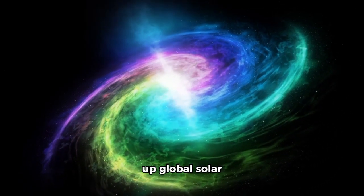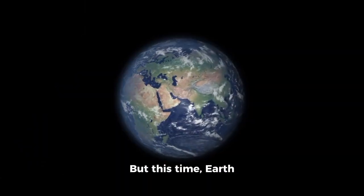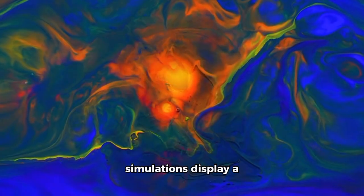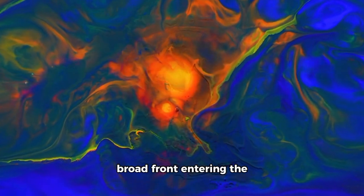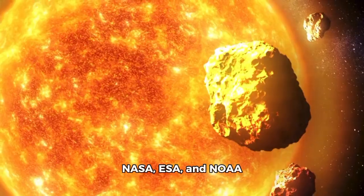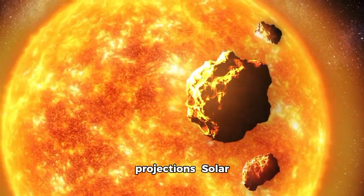The flare's energy output lit up global solar monitoring charts. But this time, Earth wasn't the target. Model overlays from ENLIL simulations displayed a broad front entering the same field of space that Comet Swan occupied. NASA, ESA, and NOAA forecast teams scrambled to update projections.